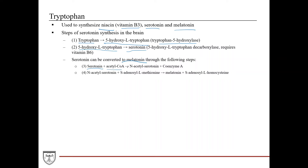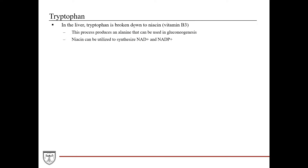Serotonin can be further converted into melatonin. Serotonin combines with acetyl-CoA to form N-acetylserotonin and coenzyme A. Then N-acetylserotonin combines with SAM, a methyl donor, and is converted into melatonin. In the liver, tryptophan is broken down into niacin, producing alanine that can be used in gluconeogenesis. Niacin itself can be utilized to synthesize NAD+ and NADP+.